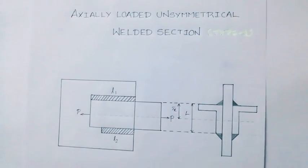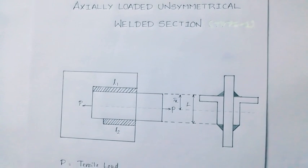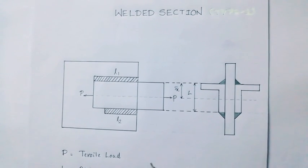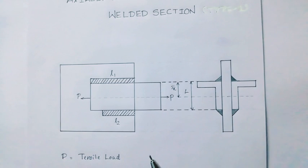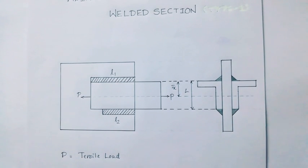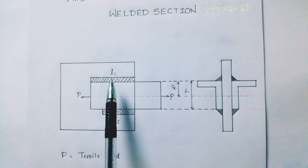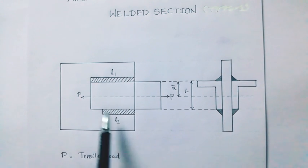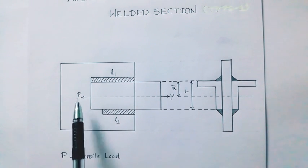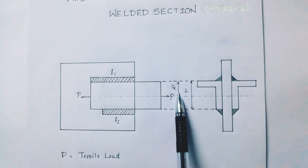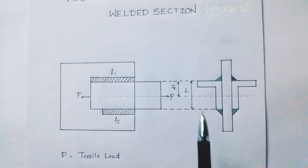We are going to take the figure of the double-angled section. This is the double-angled section. We are going to take L1 and L2; L2 is the next weld. Pn is the load. L1 and L2 are the different lengths. This is the unsymmetrical weld.